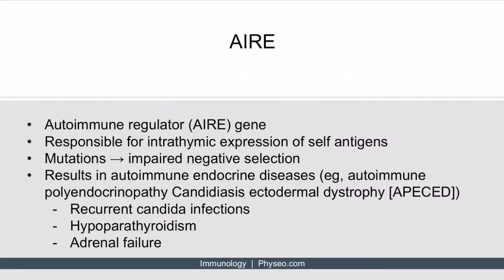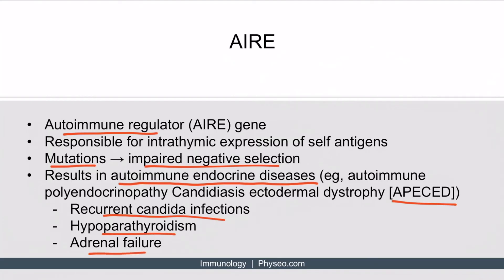An important association to make with negative selection is the AIRE gene, also known as the autoimmune regulator gene. It's responsible for the expression of self-antigens on antigen-presenting cells within the thymus. If this gene is mutated, negative selection is impaired, and the patient ends up with an abundance of self-destructive T-cells that cause autoimmune endocrine diseases. One condition is autoimmune polyendocrinopathy candidiasis ectodermal dystrophy, or APECED, characterized by recurrent candida infections, hypoparathyroidism, and adrenal failure. The key takeaway is that an AIRE gene mutation results in impaired negative selection, which then causes autoimmune problems.